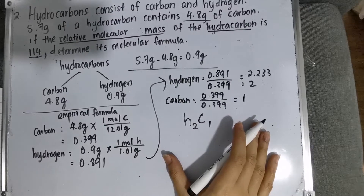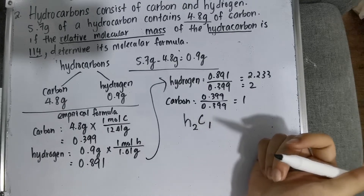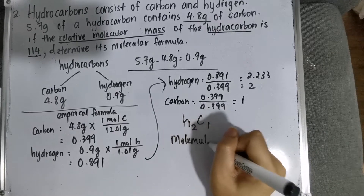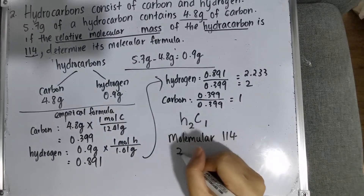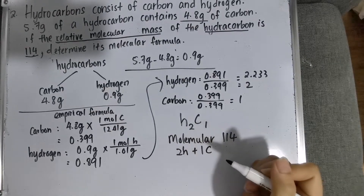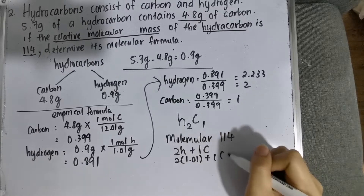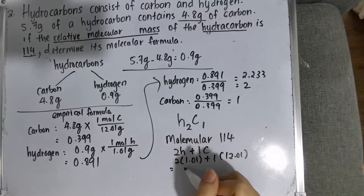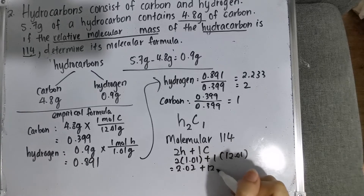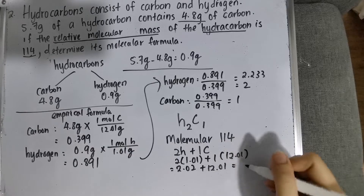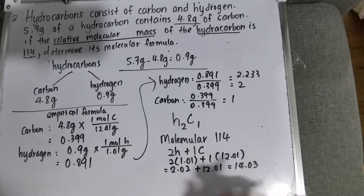Okay, then again we have to use your molecular formula. So from the question, the relative molecular mass is 114. You have hydrogen: 2, and carbon: 1. We have to multiply by the atomic masses. Hydrogen is 1.01, carbon is 12.01. So 2 times 1.01 equals 2.02, and 1 times 12.01 equals 12.01. Both added together: 2.02 plus 12.01 equals 14.03.